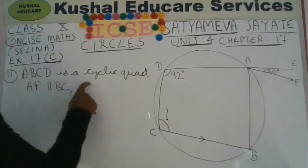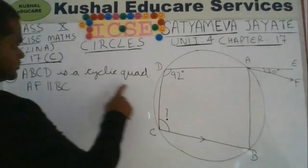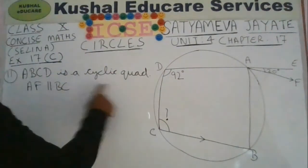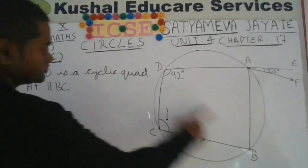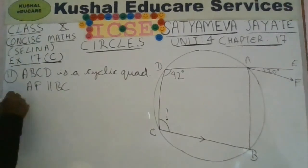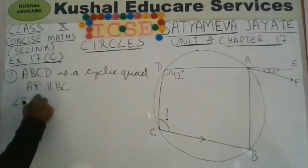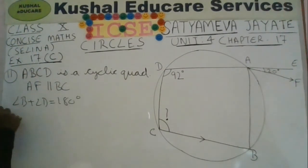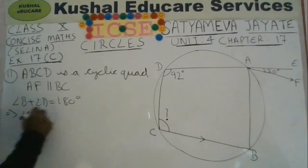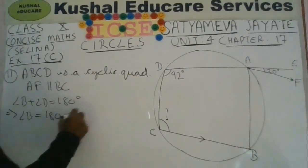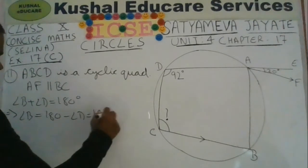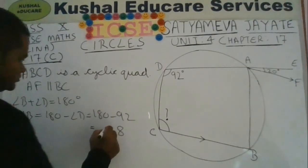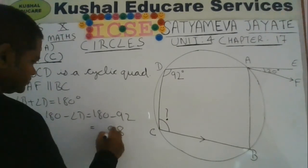ABCD is a cyclic quadrilateral in which angle ADC is given as 92 degrees. When you know that ABCD is a cyclic quadrilateral, you should make use of the cyclic property. Using the cyclic property, you can easily calculate angle ABC. Angle ABC will be equal to 180 degrees minus 92 degrees, that is 88 degrees.